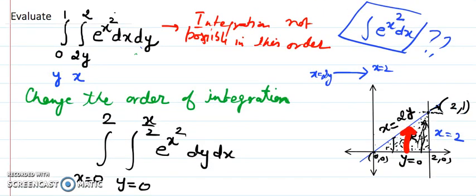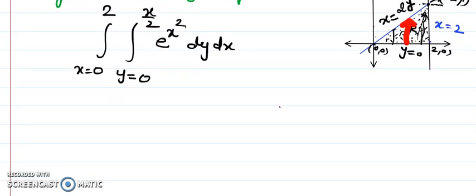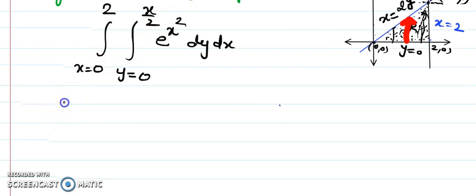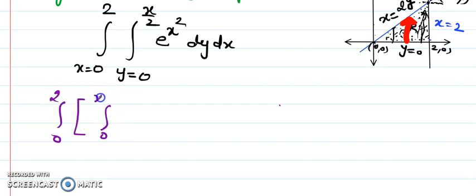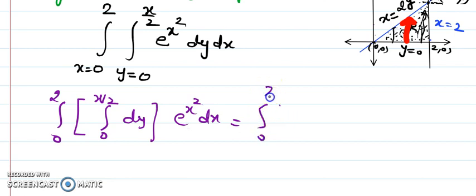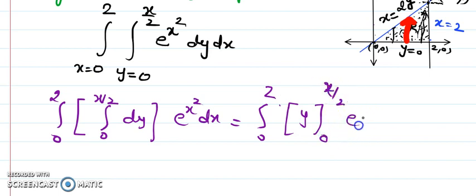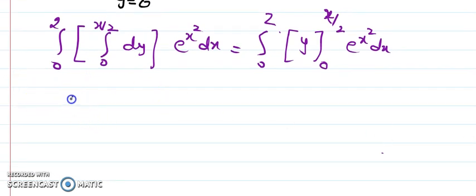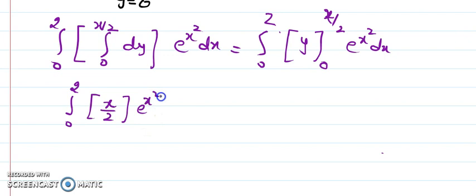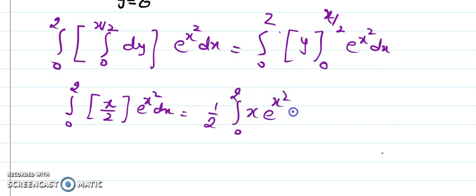If the question is only to change the order, we are done. But since we need to evaluate, I proceed. The outer integral is from 0 to 2. Since e to the power x² is constant with respect to y, integration from 0 to x/2 of dy gives y evaluated from 0 to x/2. So we get the integral from 0 to 2 of (x/2) · e to the power x² dx. I can take 1/2 outside, leaving the integral of x · e to the power x² dx from 0 to 2.